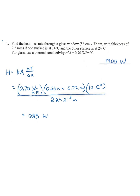So k, the thermal conductivity, is 0.70. The dimensions, the area of the window—make sure you recognize it's given in centimeters, but we want this in meters. So 0.56 times 0.72 times the temperature difference of 10 Celsius degrees, divided by the thickness of 2.2 millimeters, which is 2.2 times 10 to the negative 3 meters. We get 1,283 watts. Using two significant figures, 1,300 watts.